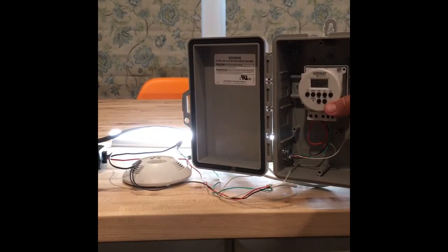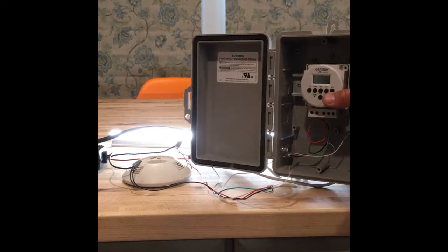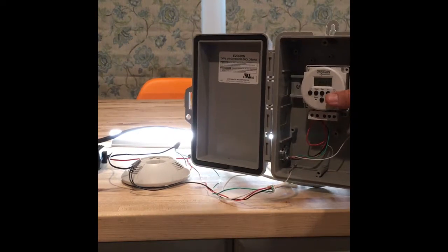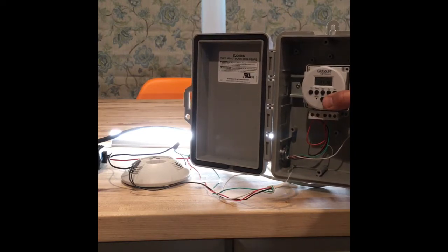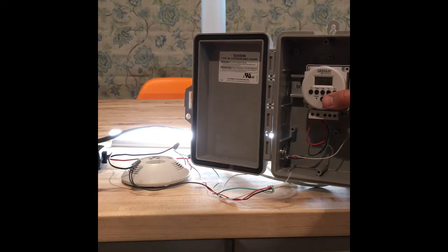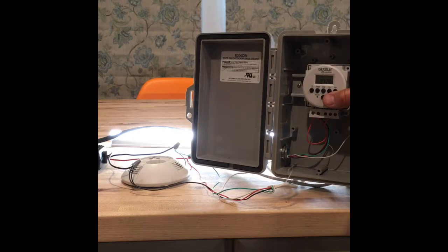Alright, so now I got my time clock wired up and my motion sensor, they're both connected, you see the wires. Now the time clock, just to show the demonstration faster, I'm gonna press the override switch. Here, click, click. So now you notice nothing's happening with the light. The reason we're not seeing anything with the light is that the motion sensor is still sensing motion.